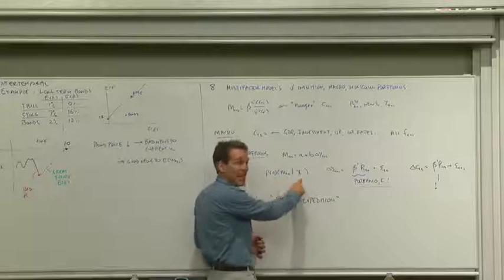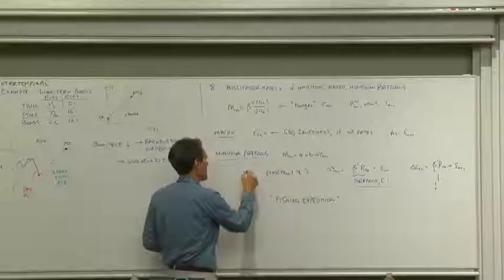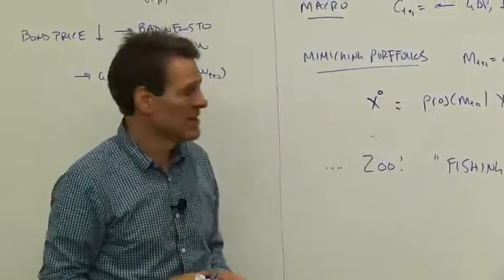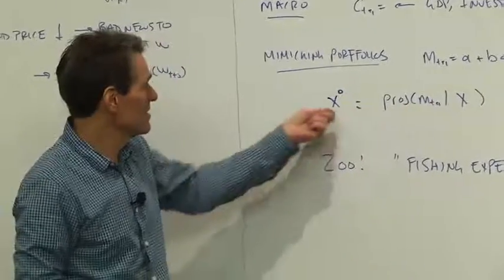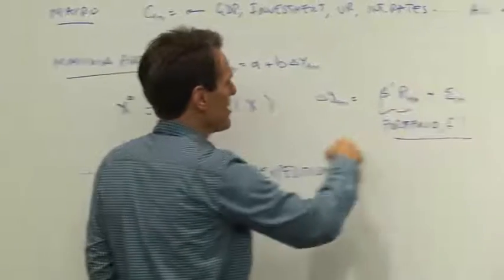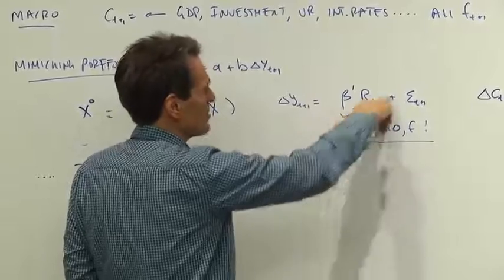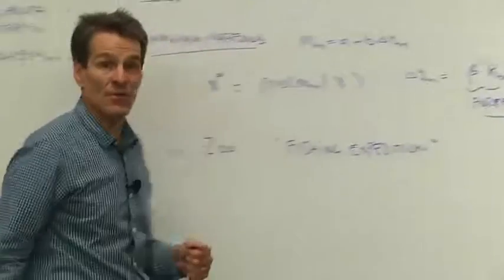We can just project M onto X, and as you remember, projecting M onto X produces an X star, which prices exactly the same way as the original M. So if you believe that factor model, then you believe this set of portfolios. In practice, project just means run a regression. So if that's income growth, you could regress income growth on asset returns, and the right-hand side of that regression is a portfolio.